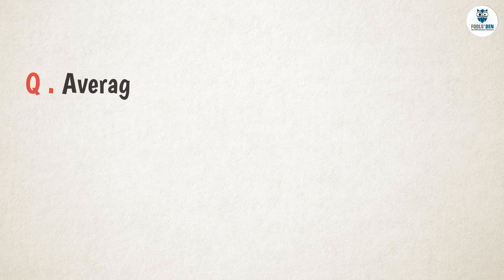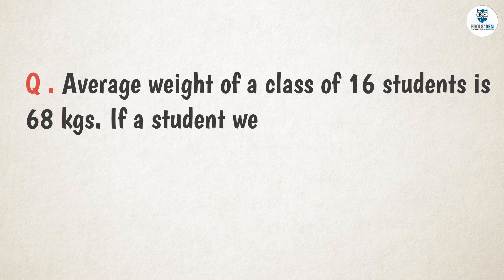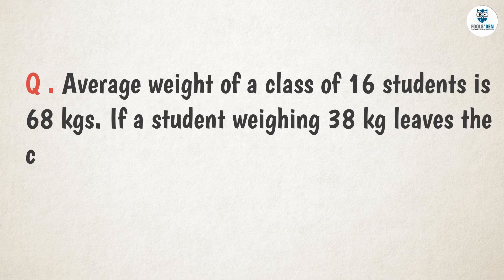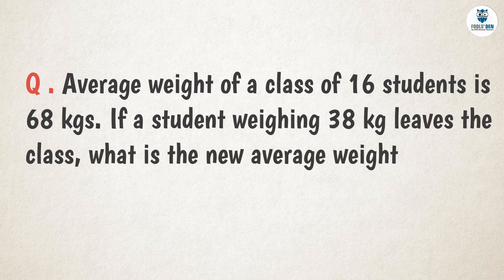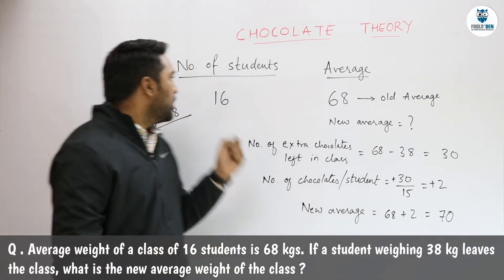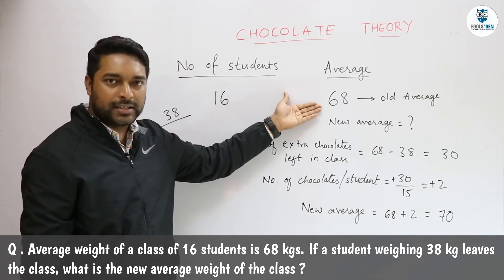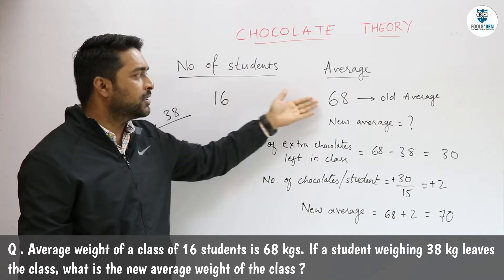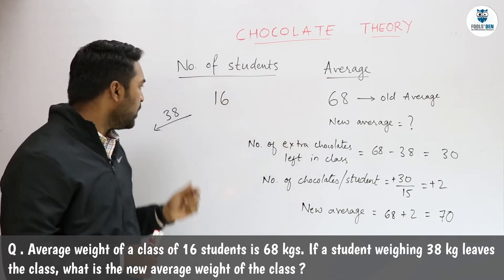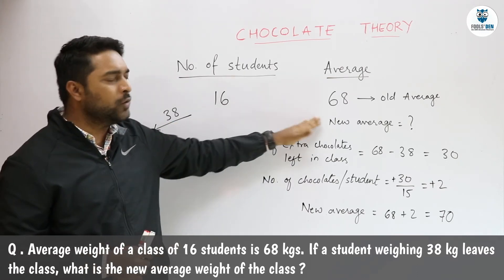Now the next question says the average weight of a class of 16 students is 68 kg. If a student weighing 38 kg leaves the class, what will be the new average weight? In this question we will consider weights as chocolates. There are 16 students and each has 68 chocolates. A student leaves with 38 chocolates and we have to find the new average.